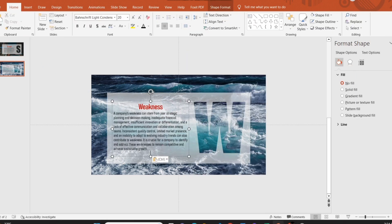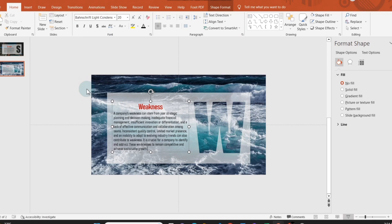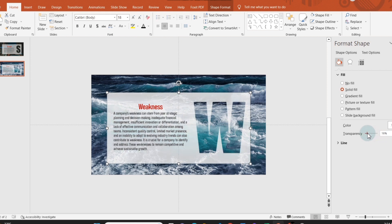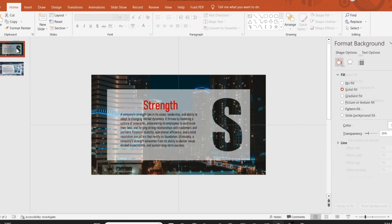After everything is done and content is added for the second slide, I ran the slideshow and saw the text was not properly visible. I adjusted the transparency of the rectangle to 26%, and I will use that for all other slides.